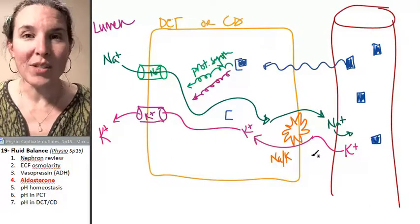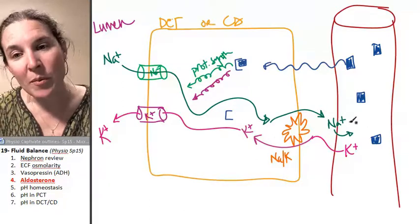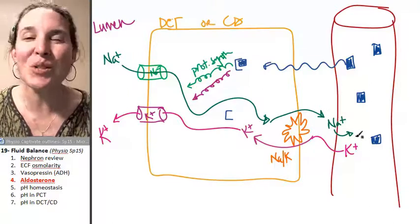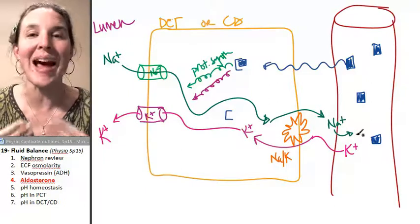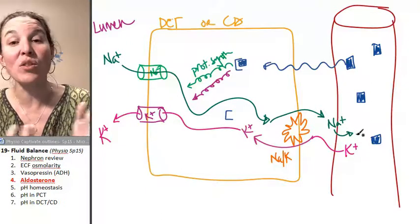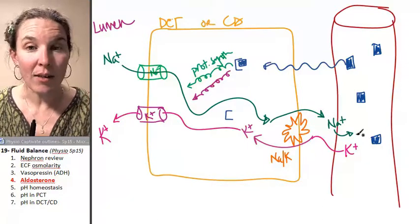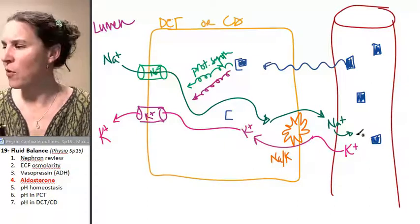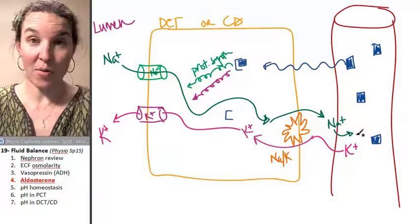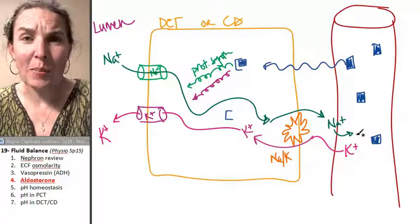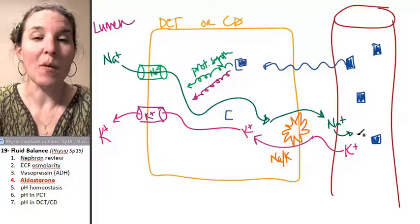Now, most of the time, aldosterone doesn't act alone. If we're reabsorbing sodium, most of the time we also have vasopressin or antidiuretic hormone acting at the same time. So that's also going to pull water into the mix. All right. That seemed a little bit straightforward, which is a little scary, but I think that was pretty straightforward, wasn't it? Easy peasy. Now let's talk about pH homeostasis overall.